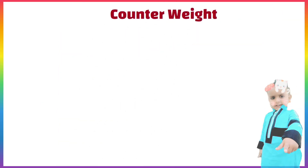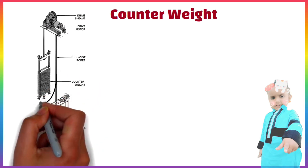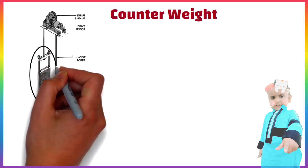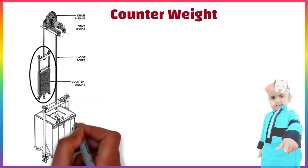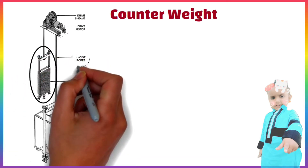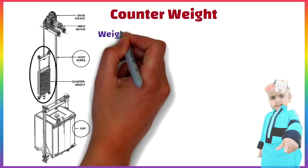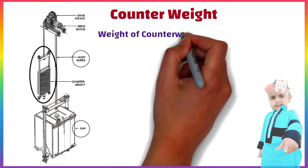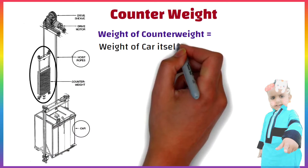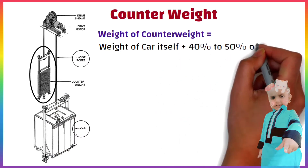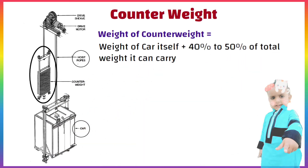Counterweight is a unit consisting of steel weights which counterbalance the weight of the car, and to which the suspension ropes are attached. The weight of the counterweight is equal to the weight of the car itself plus 40–50% of the total weight it can carry.